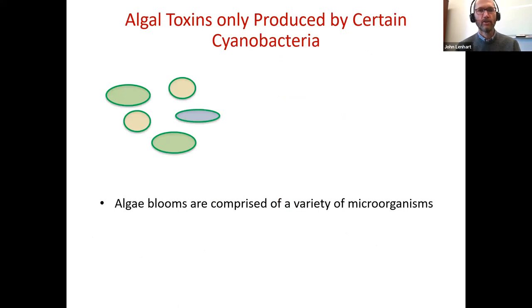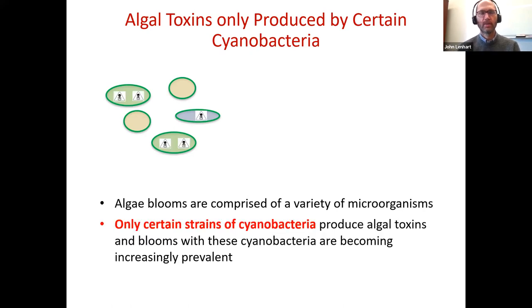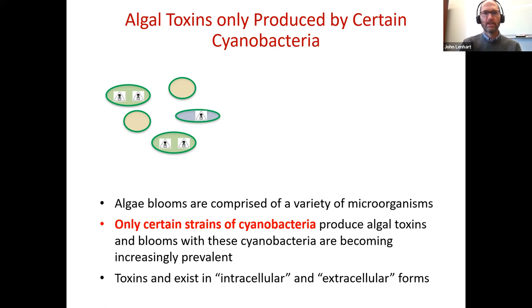Here's a cartoon of a bloom. We can envision a bloom as being comprised of microorganisms of different shapes and sizes. The ones that are of concern are those primarily that are cyanobacteria, and certain strains of cyanobacteria produce toxins. These blooms are becoming more prevalent. With respect to toxin production and treatment, there are two categories of toxins to keep in mind: intracellular toxins and extracellular toxins.